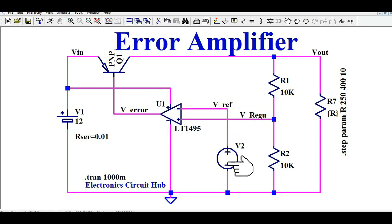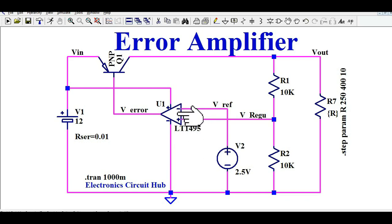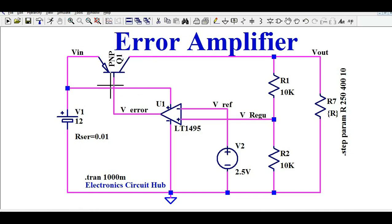The minus terminal is at 2.5 volts. As long as the voltage at the minus terminal is greater than the voltage at the plus terminal, the op-amp output will be 0 — grounded. As soon as the voltage at the plus terminal exceeds 2.5 volts and becomes greater than the minus terminal, the op-amp output will go high. When the op-amp output is low, this transistor works and you get the output voltage. When the op-amp output is high, the transistor does not work. That is how this error amplifier works.